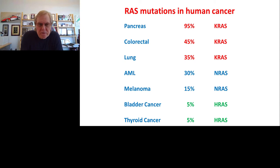This summarizes the problem we're trying to address. RAS mutations occur in a very large number of human cancers where they play a primary driving role in the development and progression of the disease. RAS mutations occur most frequently in pancreas cancer, where almost all pancreas cancers are caused by activation of the KRAS oncogene. KRAS mutations also occur in almost half of all colorectal cancers and a third of all lung cancers.